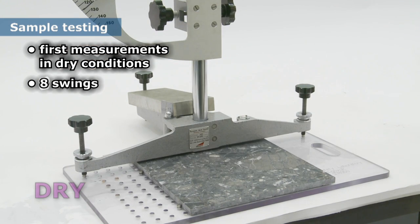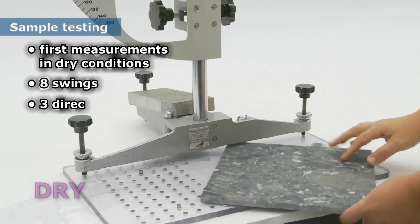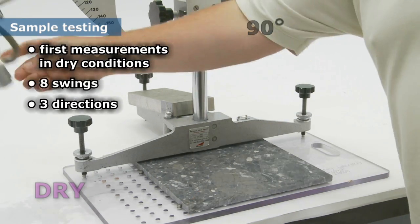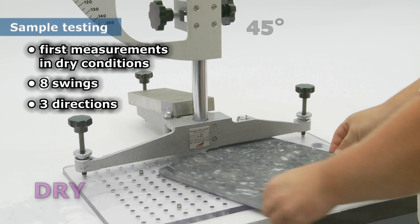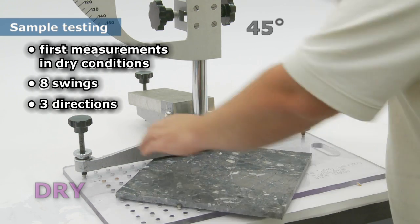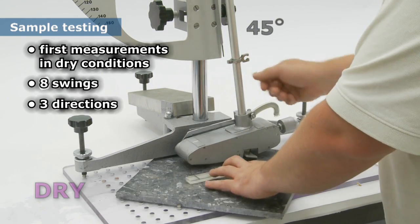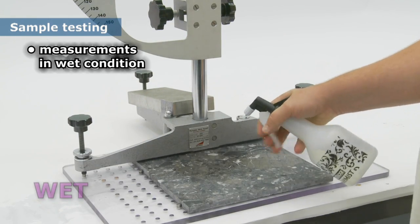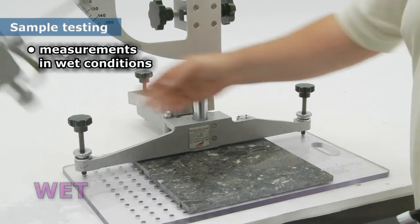The procedure requires tests to be carried out in three different directions on the dry surface. This is normally at 90 degrees and 45 degrees to the original direction. The surface is then wetted and tests are carried out in the same three directions.